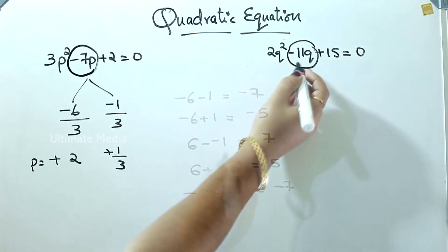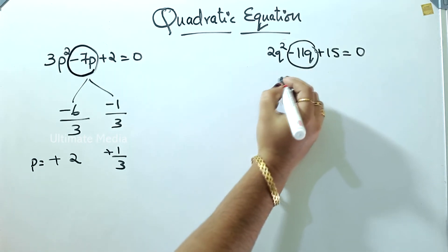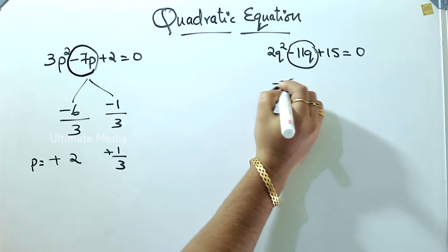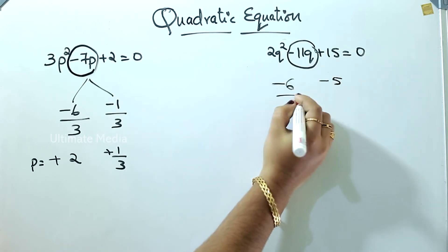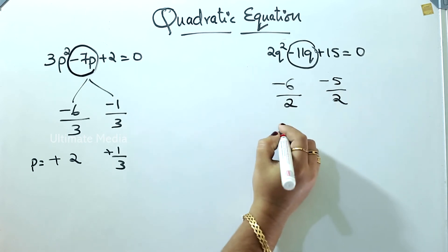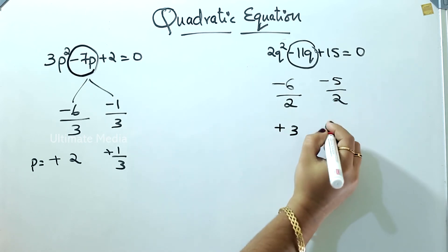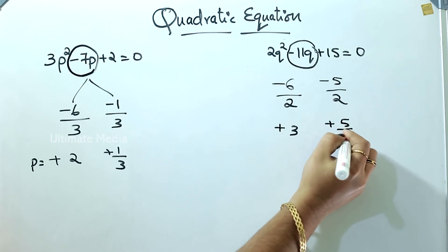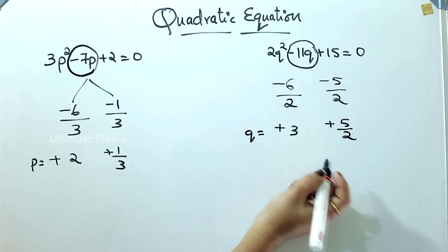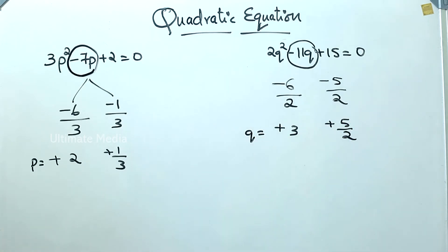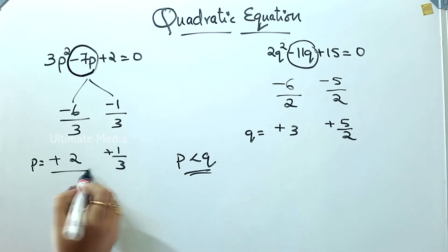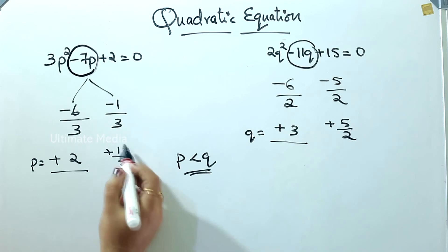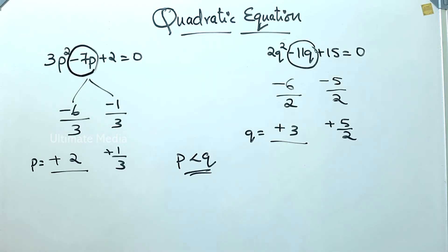Minus 11 is minus 6 minus 5. Then, if we divide this coefficient, I need plus 3 and plus 5 by 2. Then q is equal to — p is less than q. It is plus 2 and plus 3. It is 1 by 3 and 5 by 2. This is q is equal to. Then p is less than q.